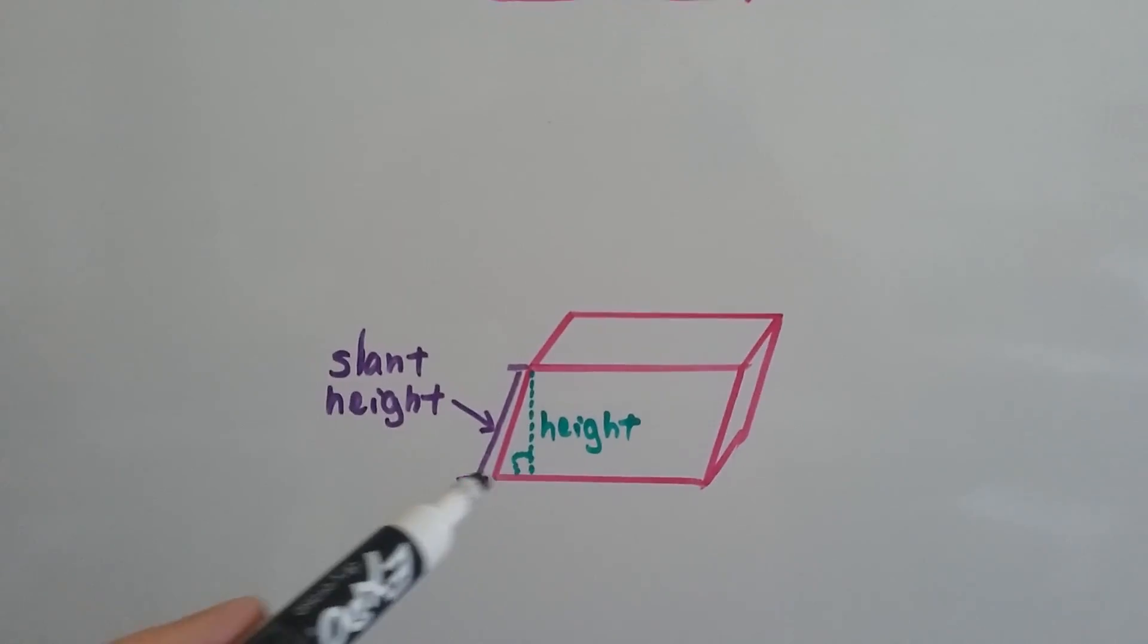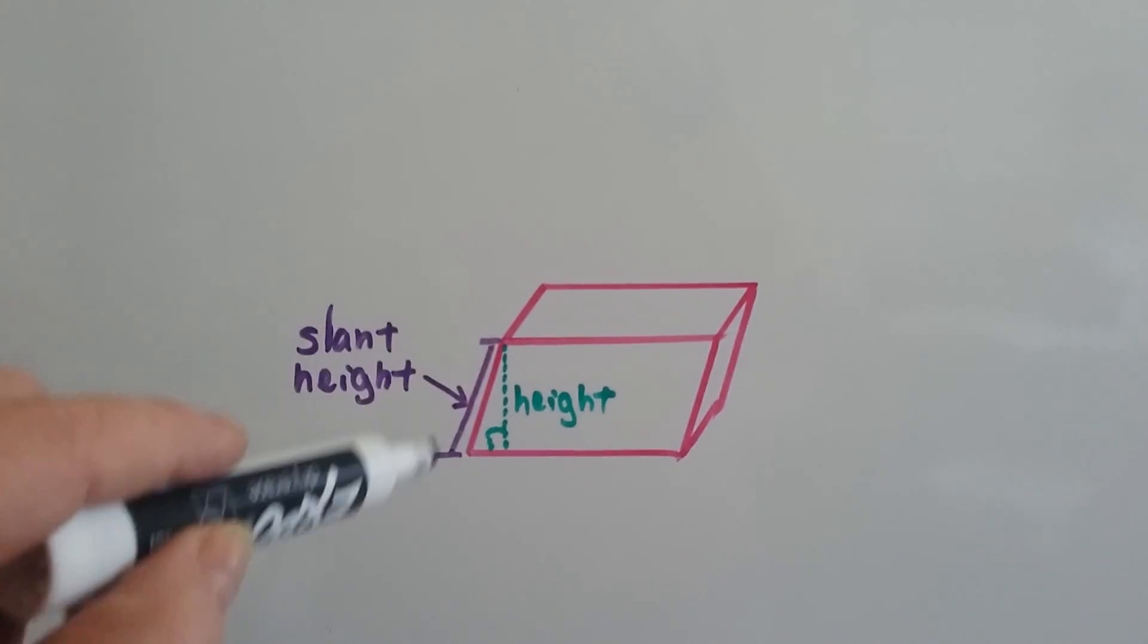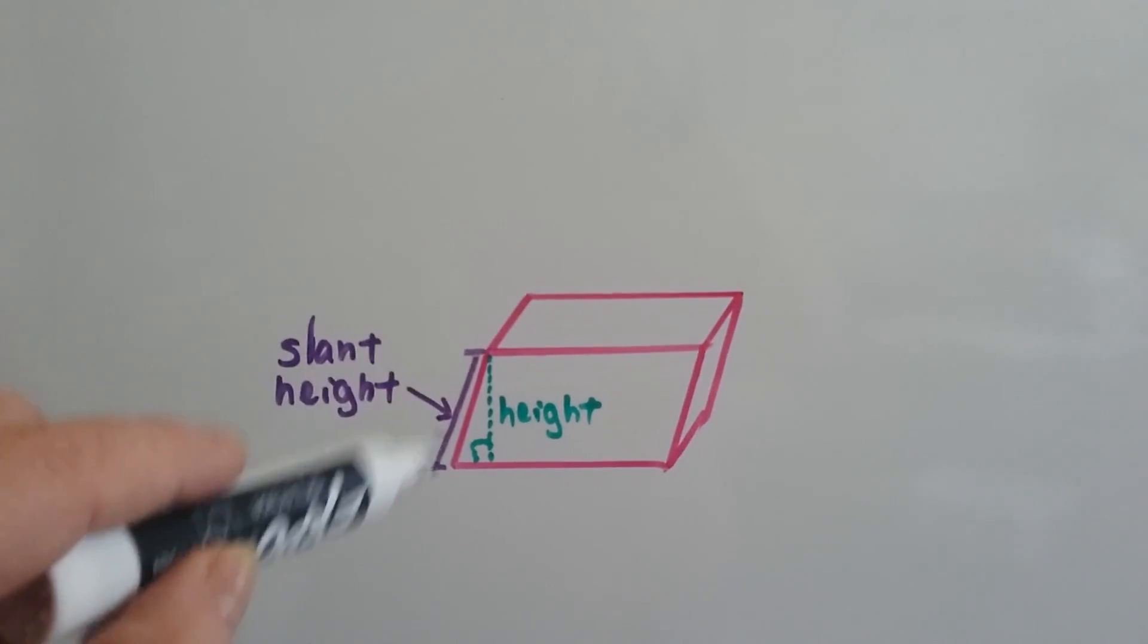See how the height is on a perpendicular line here? The slant height is the actual line segment right here.